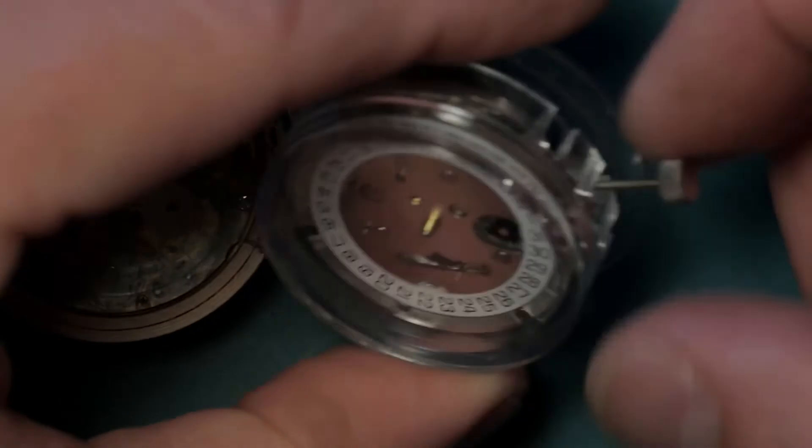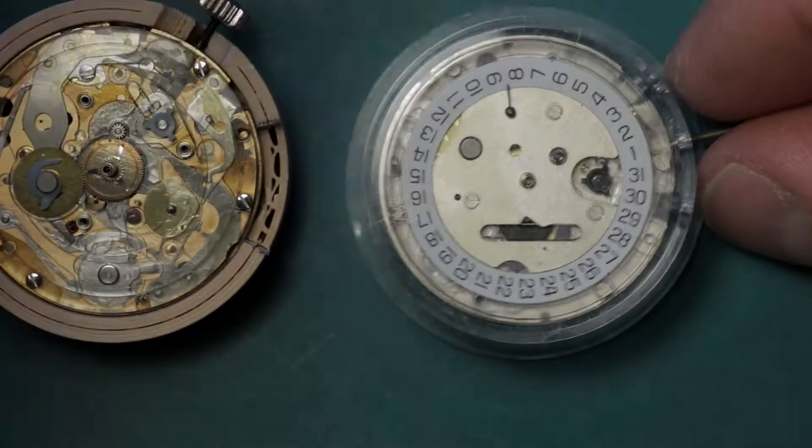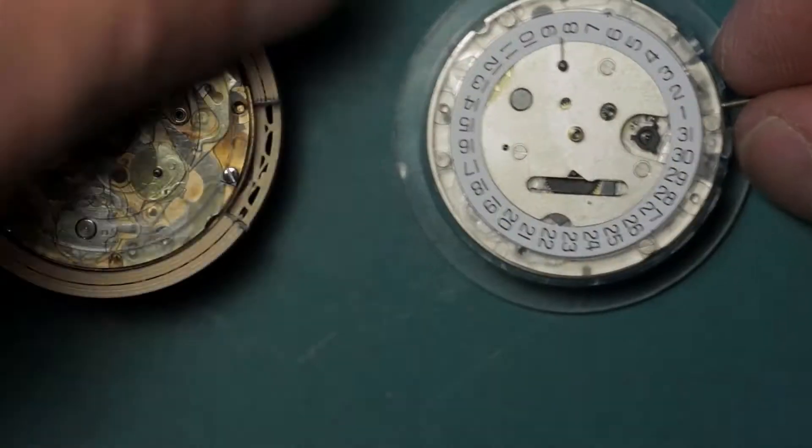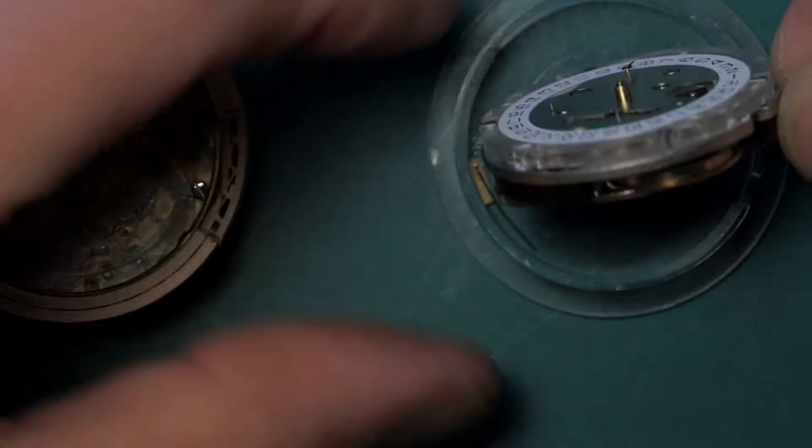Then pull out to the second position and rotate counterclockwise to turn the hands clockwise to set. And then, of course, your start, stop, and reset is as per a traditional chronograph.